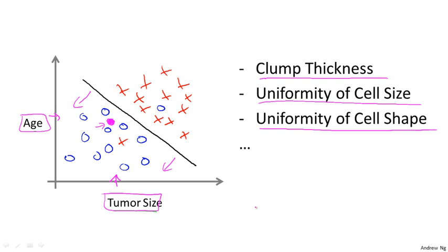And it turns out one of the most interesting learning algorithms that we'll see in this class is a learning algorithm that can deal with not just two or three or five features, but an infinite number of features. On this slide, I've listed a total of five different features, two on the axes and three more up here. But it turns out that for some learning problems, what you really want is not to use three or five features, but instead you want to use an infinite number of features, an infinite number of attributes, so that your learning algorithm has lots of attributes or features or cues with which to make those predictions.